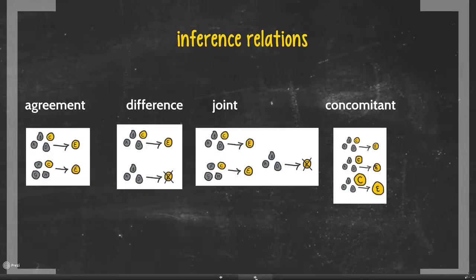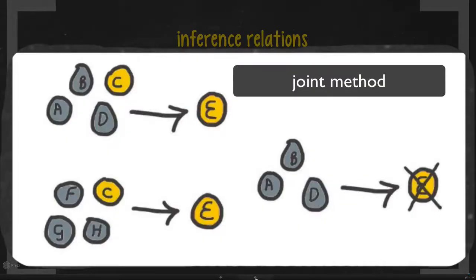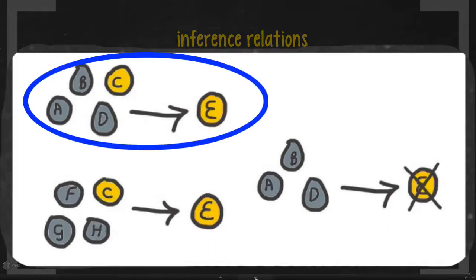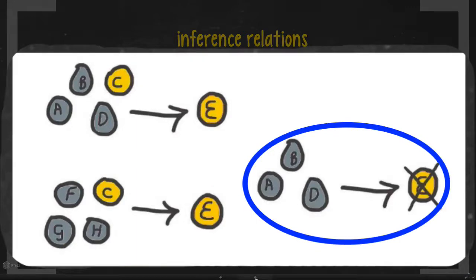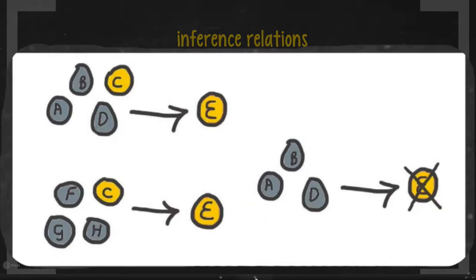The next method combines agreement and difference. And this, when you have a joint situation, you then know that you are working with almost absolute certainty. So for example, if you have A, B, C, and D, and E happens, you then have F, G, H, and C, and E happens. So C happens twice, E happens twice. And in the third instance, you have only A, B, and D, and then no C, and then no E. Well, then you're pretty guaranteed that there's a strong relationship between C and E.